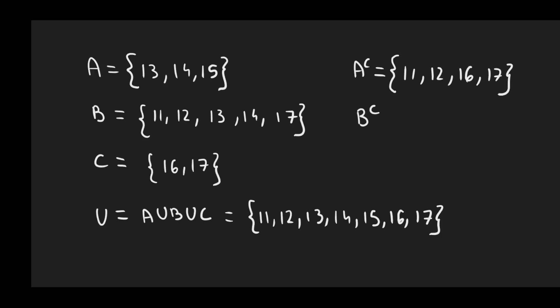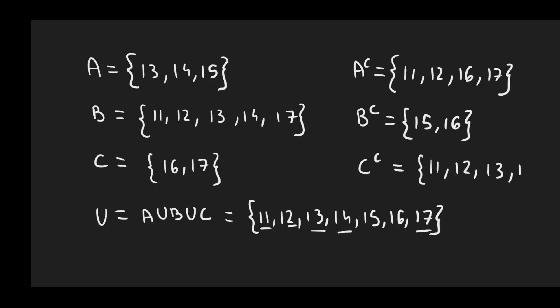So what is the complement of B? We remove 11, 12, 13, 14 and 17. So we are left with 15 and 16. And for the complement of C, we remove 16 and 17 from the universal set. And we are left with 11, 12, 13, 14 and 15. And that's it. Thank you.